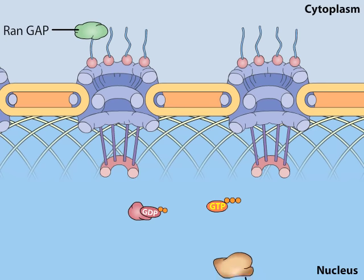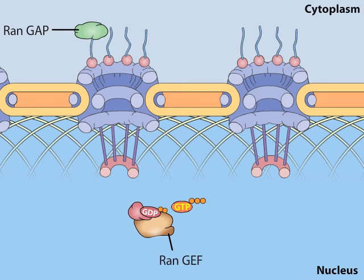In the nucleus, another protein called RAN-GEF, for Guanine Nucleotide Exchange Factor, stimulates RAN-GDP to release its GDP and pick up GTP.